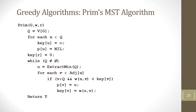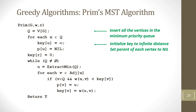Here is the pseudocode for Prim's minimum spanning tree algorithm. Initially, we insert all vertices into the priority queue, initialize the key of each vertex to infinity, and set the parent of each vertex to null. The key value of the root node is set to 0. Then, while the queue is not empty, we remove the vertex with the minimum key value and explore its neighbors. If a neighbor is in the queue and the edge weight is less than the neighbor's key value, we assign the current vertex as the parent of the neighbor and update its key value.